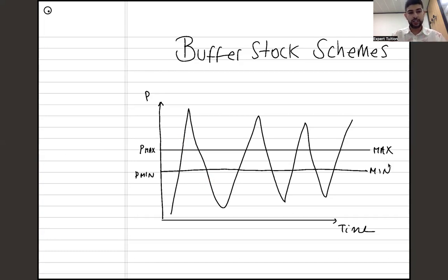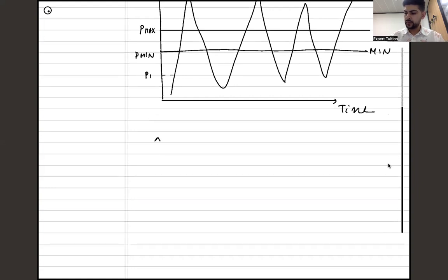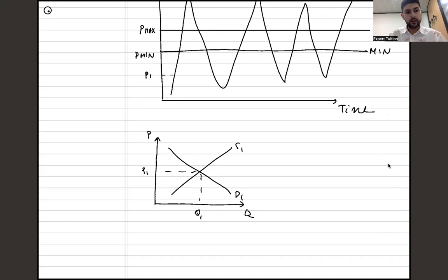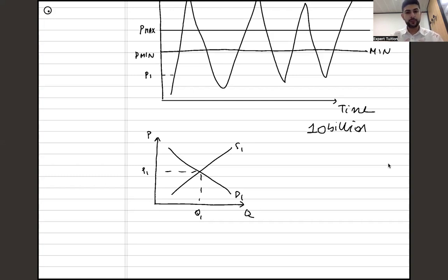Let's understand the logic before we construct the diagram. Assume initially the market price happens to be P1 on a supply and demand diagram. Is P1 too high or too low? Clearly it's too low because it's below the minimum. Was that a good or bad harvest? It's definitely a good harvest — so much of this good is being produced that it's not scarce, so the price is very low. Let's say this is wheat and 10 billion units were produced in that harvest, hence the price is really low.